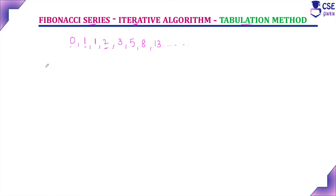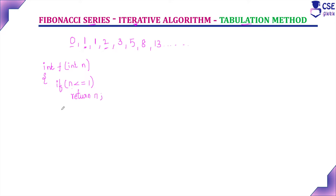Considering the iterative algorithm: int Fibonacci(int n). Here n is the value we are going to set. If n value is 0 or 1, it has to return the same n value. So, if n is less than or equal to 1, return n itself. Then we assign the initial values: f[0] = 0 and f[1] = 1.